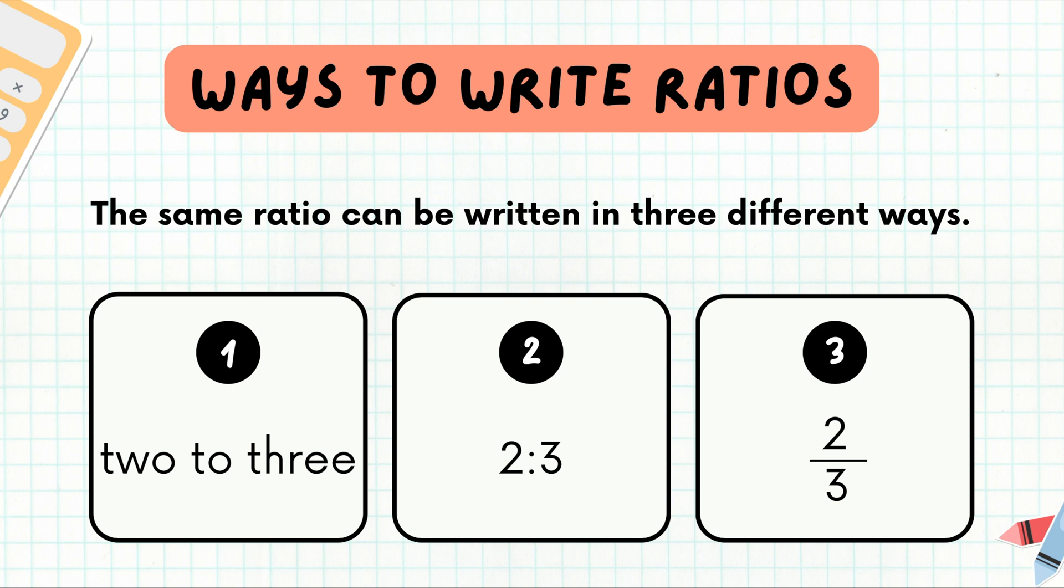Well, those are some ways to write ratios. The same ratio can be written in three different ways. So first you can use word form, two to three. That word 'to' tells me that this is a ratio. You could write it with a colon like in number two. This also is read two to three.